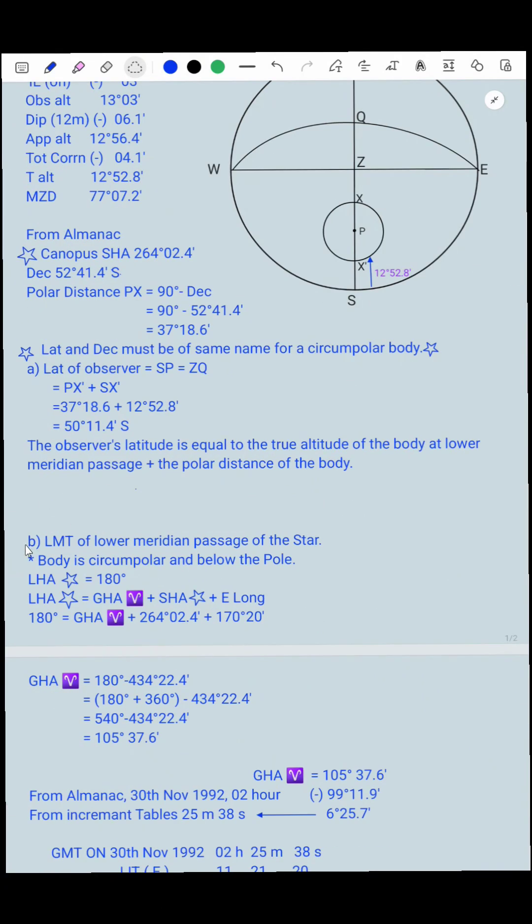Now coming to the part B: LMT of lower meridian passage of star. We know that the given body is circumpolar and is below the pole. When the body is circumpolar and below the pole, we know that LHA, that is local hour angle, is equal to 180 degrees. LHA star equals GHA Aries plus SHA star plus its longitude.